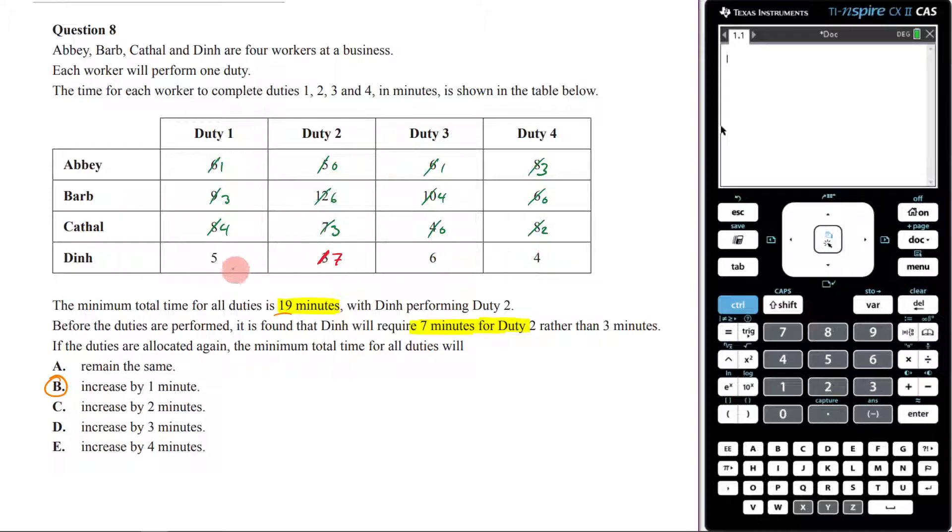The smallest number here is 4. This will become 1, this will become 3, this will become 2, this will become 0.